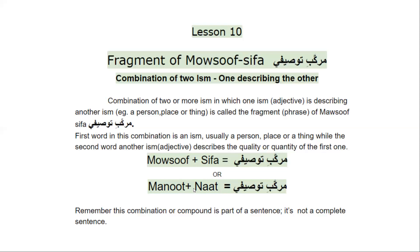We just need to keep in mind that this murakkab or this combination is not a complete sentence. It's a part of a sentence — that's why it is called a fragment.